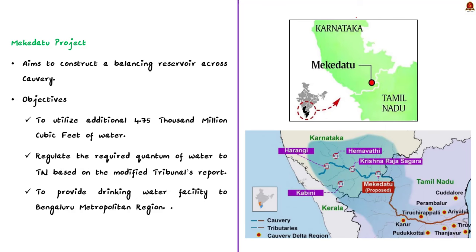The Mekedatu project aims to construct a balancing reservoir across the Kaveri River. It is a multi-purpose project with several objectives, including utilizing an additional 4.75 TMC (thousand million cubic feet) of water and providing drinking water to the Bengaluru Metropolitan Region. However, the Mekedatu issue is a continuation of the long-existing Kaveri river water dispute between Karnataka and Tamil Nadu. Kaveri is an interstate river with its upper hilly catchment in Karnataka and Kerala, and its lower part in the plains of Tamil Nadu.